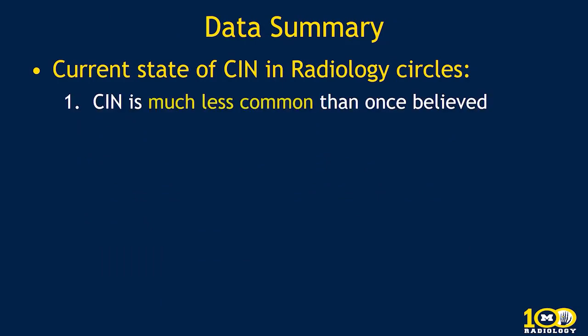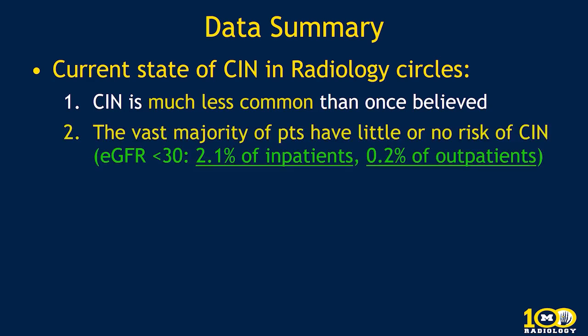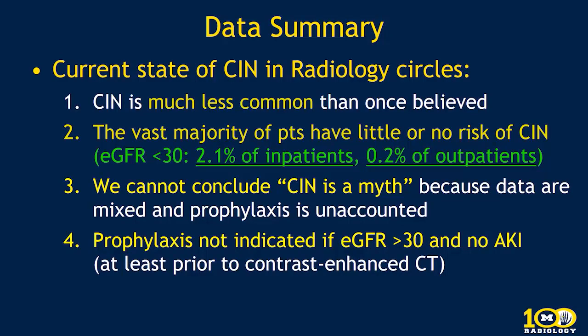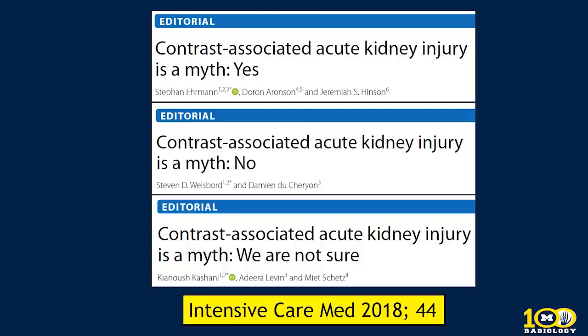The current state of CIN in radiology: CIN is much less common than once believed, and the vast majority of patients have little or no risk. Using eGFR less than 30 as our screening cutoff — now advocated by the ACR — affects about 2% of inpatients and 0.2% of outpatients. We cannot conclude CIN is a myth based on propensity-adjusted studies because data are mixed and prophylaxis is unaccounted for. Prophylaxis is not indicated if eGFR is above 30 and there's no AKI, at least prior to contrast-enhanced CT. This is not just a radiology issue — a 2018 editorial in an intensive care medicine journal debated whether CIN is real.